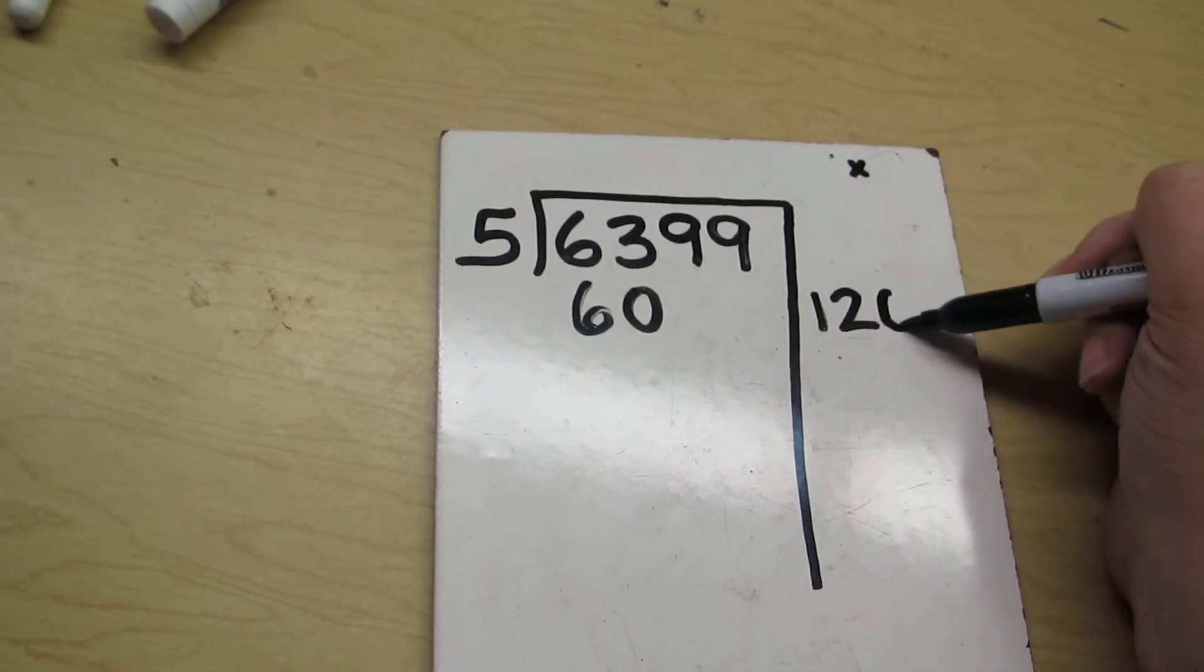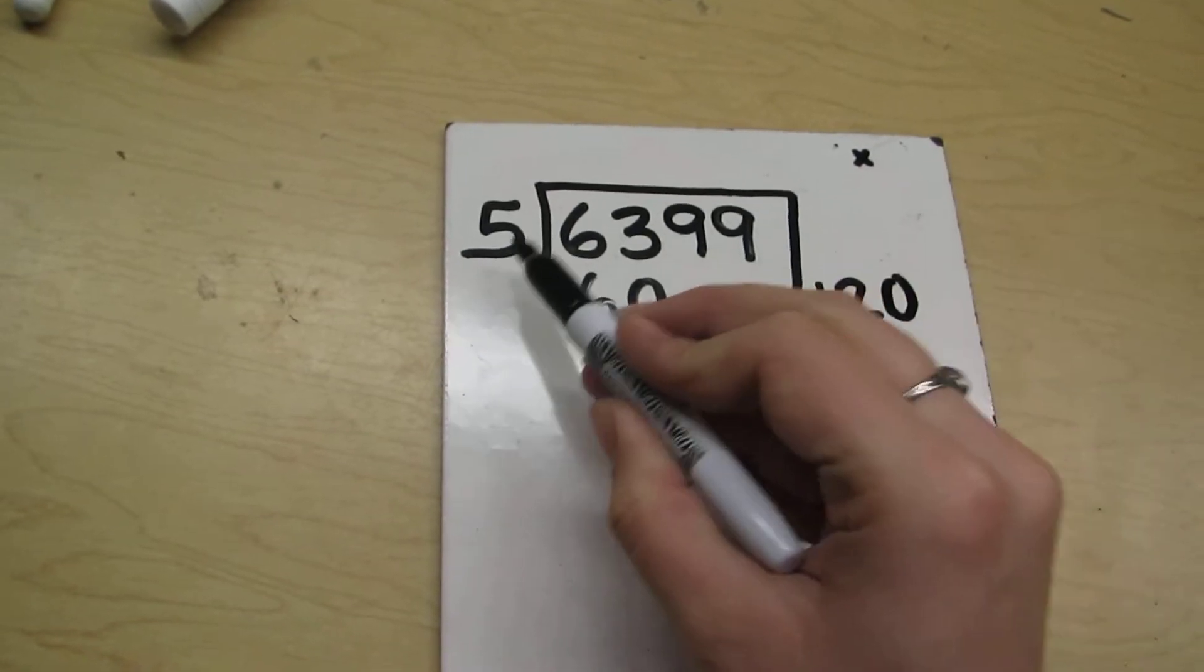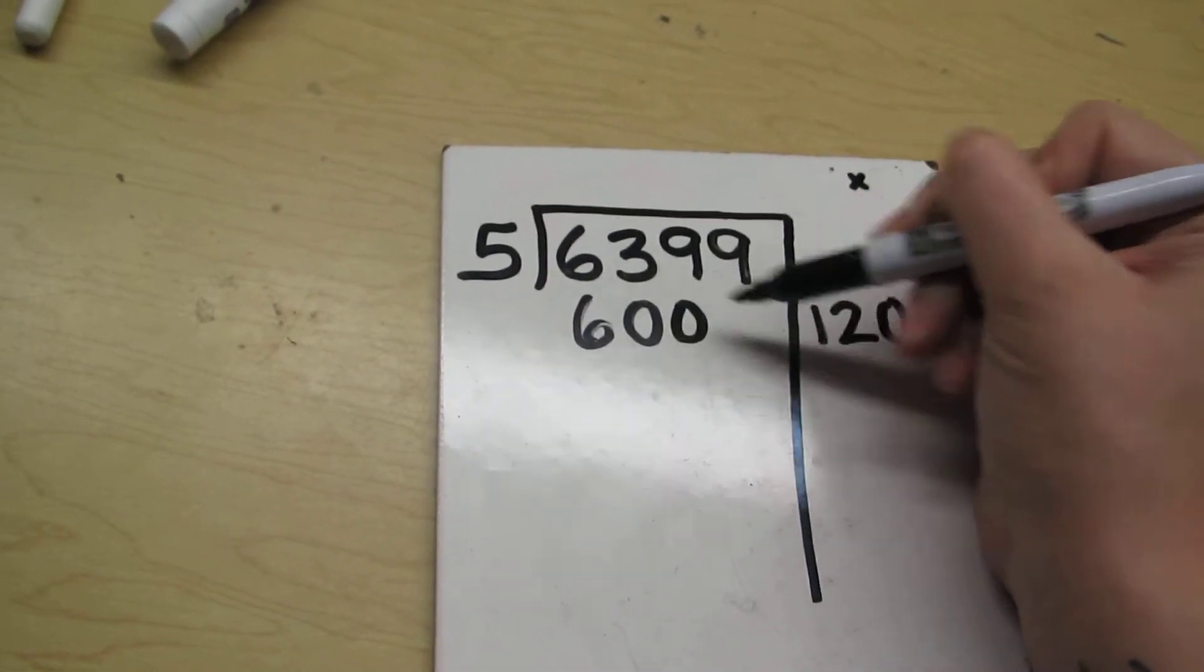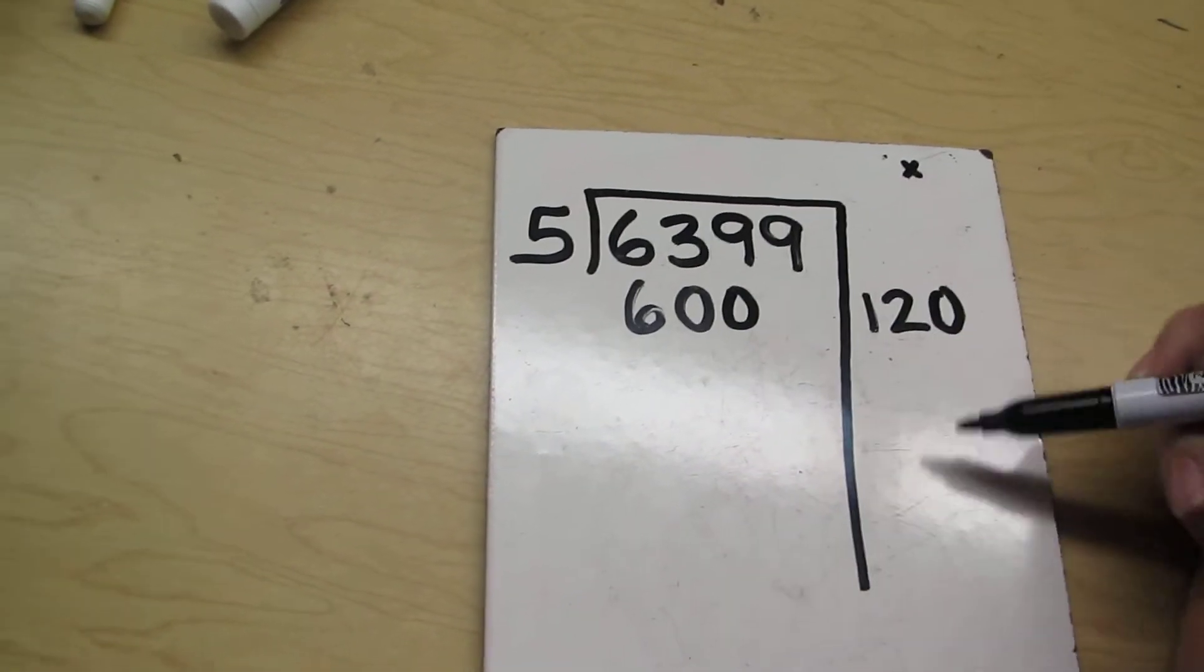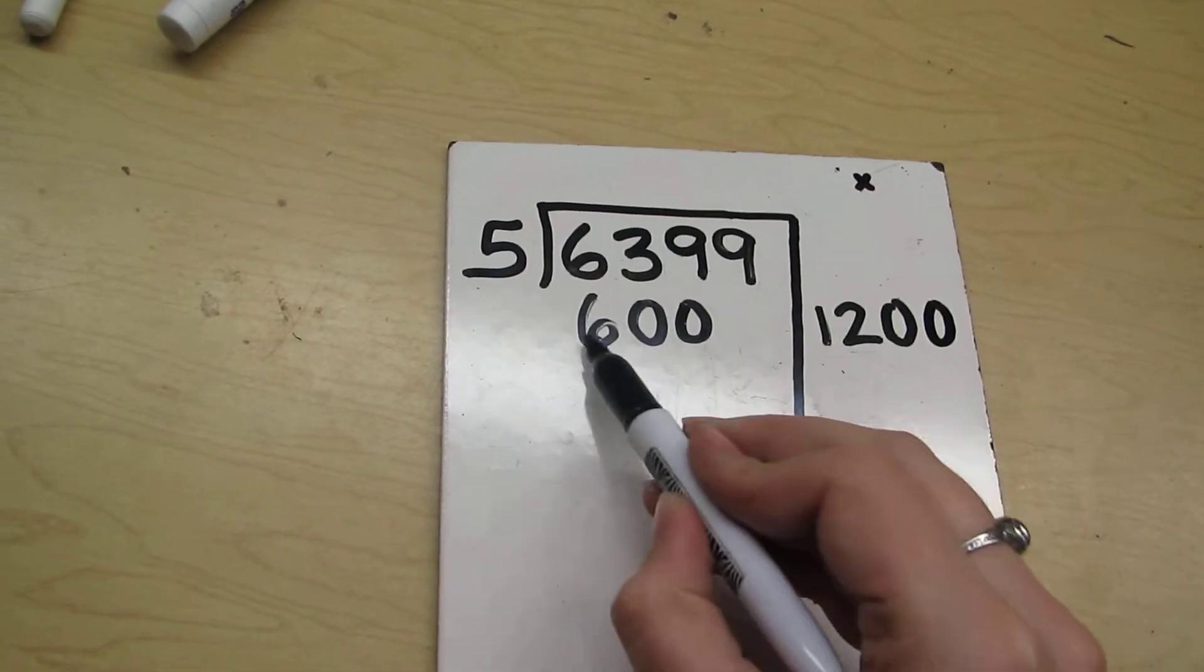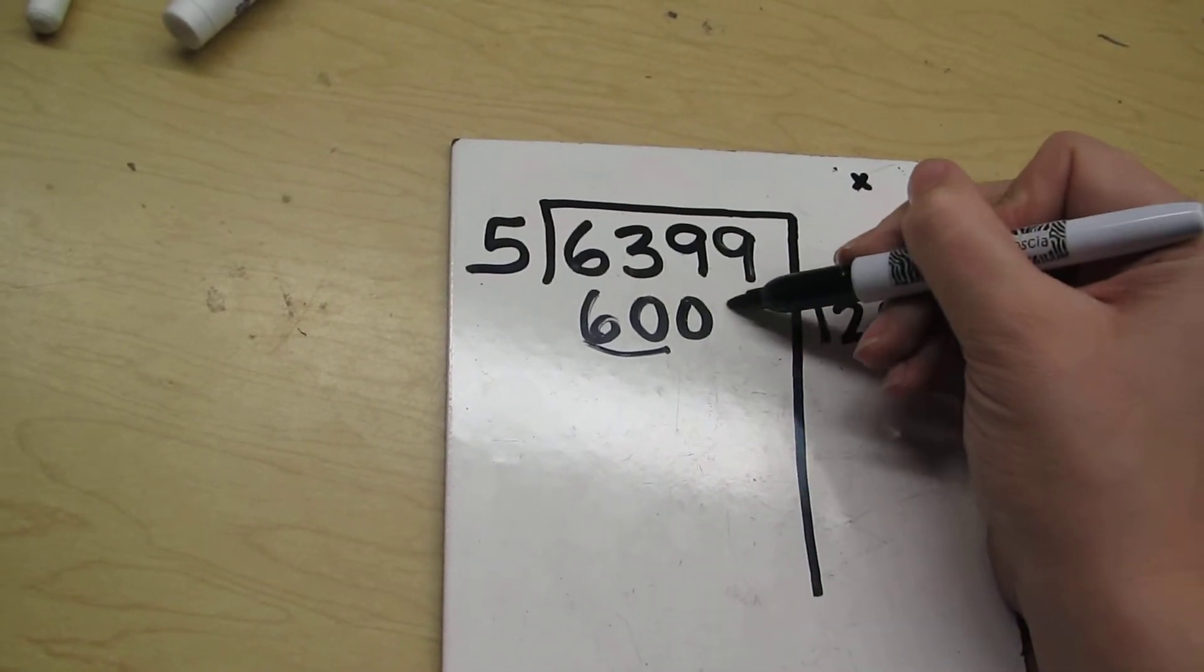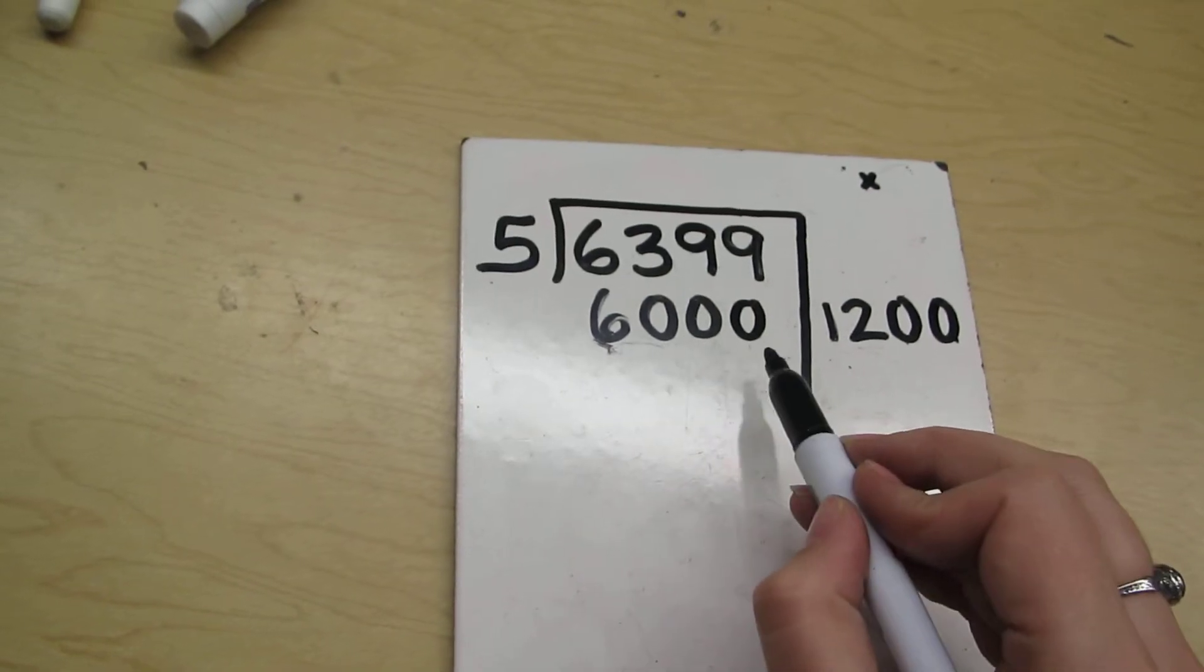So maybe 5 times 120. Let's try it. 5 times 12 is 60. Add a 0 at the end. Now I need to get a little bit bigger because I only have 600 now. So maybe I should add another 0 to this one. 5 times 12 is 60 plus two zeros. There we go. Now I got to 6,000.